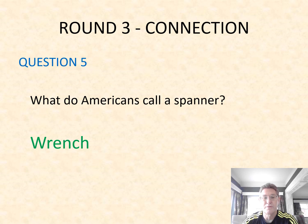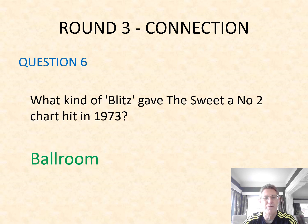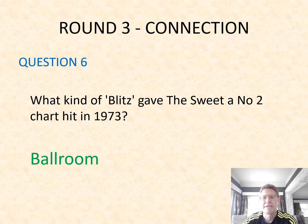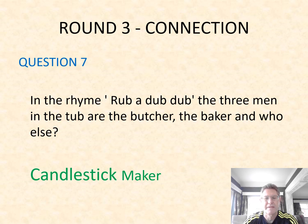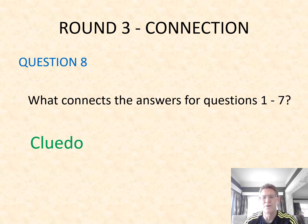Number five: what do Americans call a spanner? They call it a wrench. Number six: what kind of blitz gave The Sweet a number two chart hit in 1973? Ballroom Blitz. Number seven: in the rhyme Rub-a-Dub-Dub, the three men in the tub are the butcher, the baker and the candlestick maker. Question eight: what connects the answers for questions one to seven? They are all to do with the board game Cluedo.